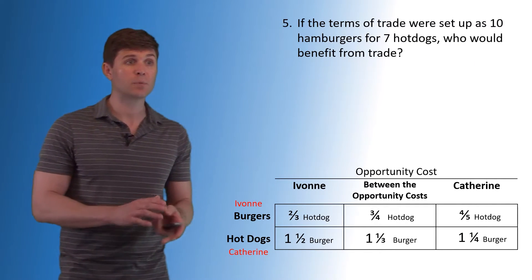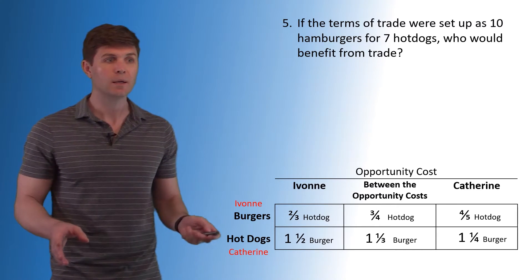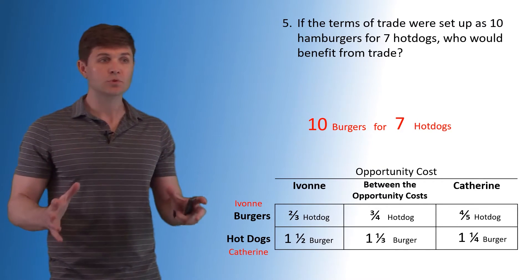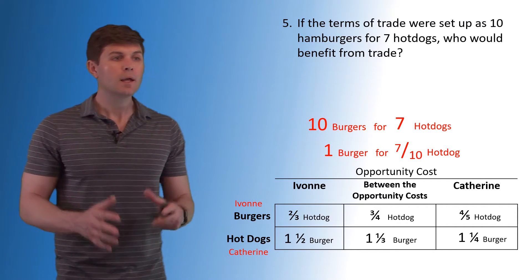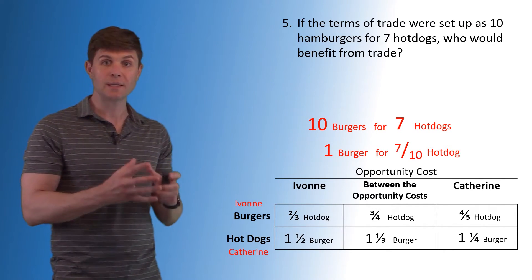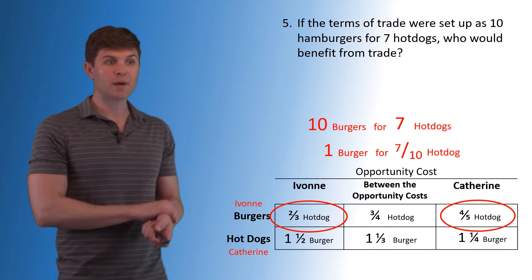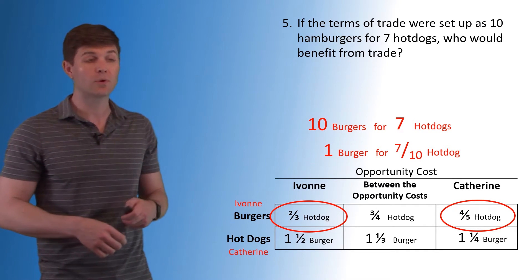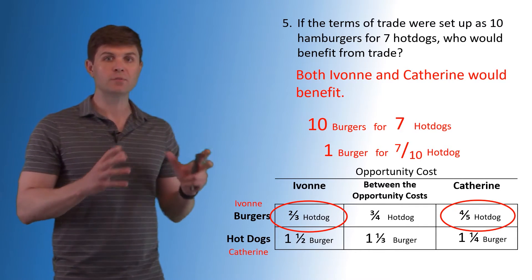The last question: if terms of trade were set at ten hamburgers for seven hot dogs, who would benefit from this trade? Let's take a look — ten burgers for seven hot dogs is the exact same trade as one burger for seven-tenths of a hot dog. So we need to decide whether one burger for seven-tenths of a hot dog falls within the opportunity cost. Yvonne's opportunity cost is two-thirds of a hot dog, Catherine's is four-fifths. Seven-tenths is less than four-fifths yet greater than two-thirds, so both Yvonne and Catherine would benefit from these terms of trade.